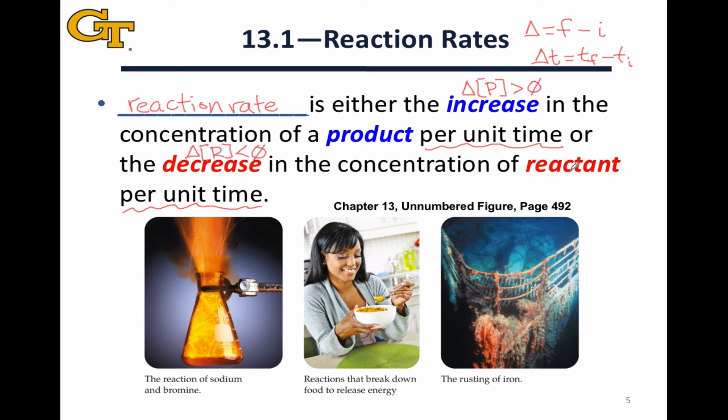Before diving a little deeper into this math, it's worth appreciating that chemical reactions can have widely different rates. Three examples are shown for you here. The reaction of sodium and bromine is essentially instantaneous. As soon as the reactants are mixed, the reaction begins occurring extremely rapidly.